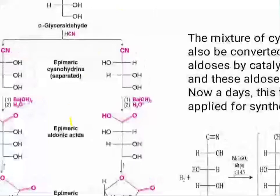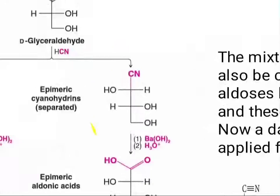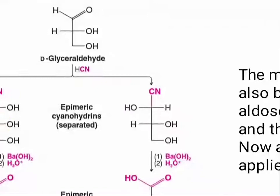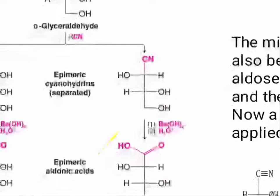Now let's see this visually. Here is glyceraldehyde. If you add HCN, you will get two types of cyanohydrin which are epimeric, because in one the OH is on the right and in the other the OH is on the left. The difference between the two epimers is only in that position.